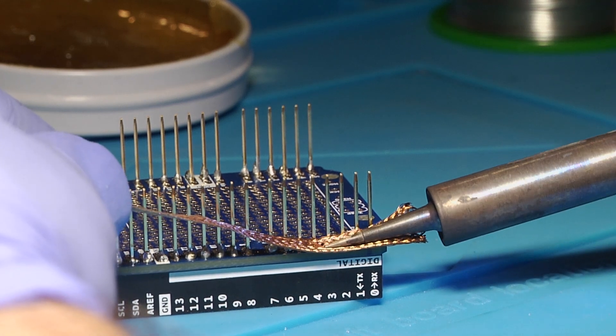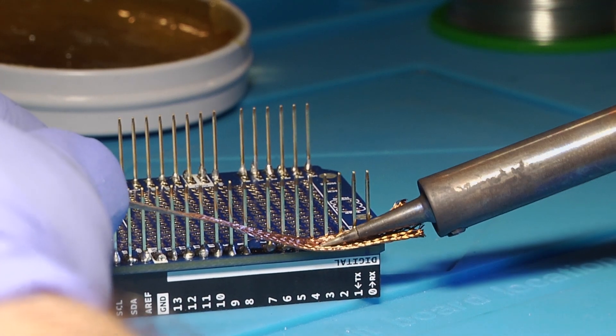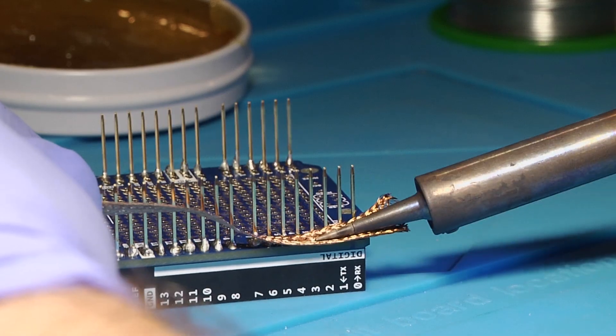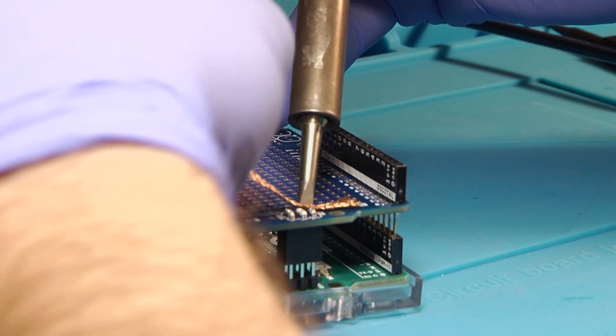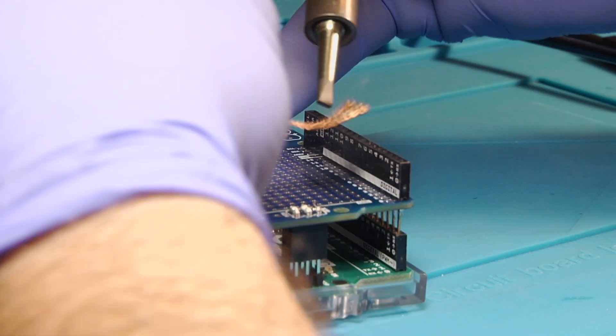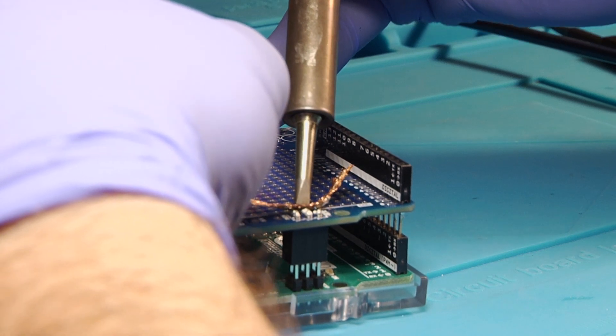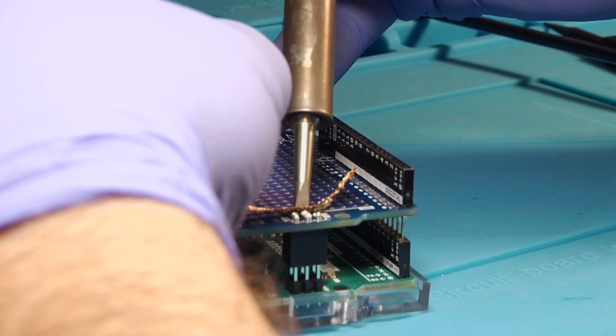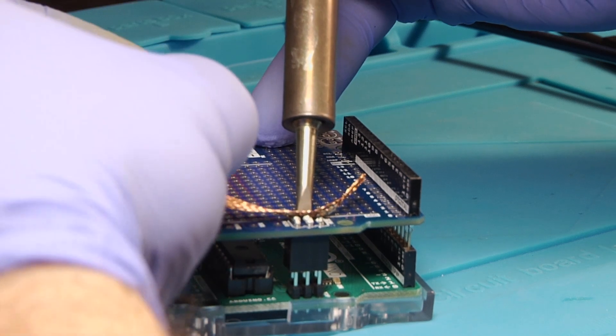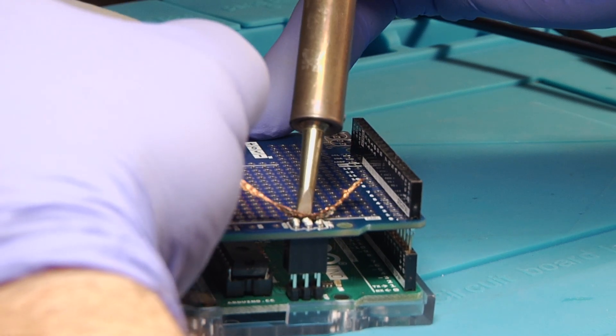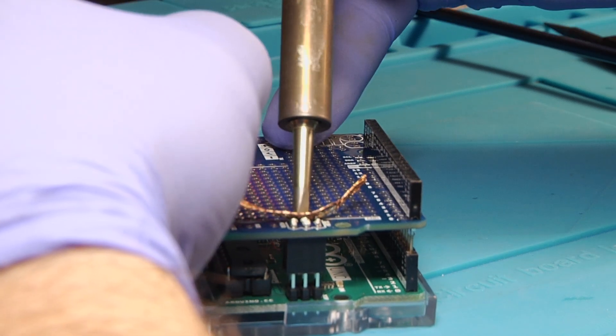If you make a mistake, like I did, like putting too much solder, use some solder wick. The solder wick can also completely remove the solder. Be careful. The solder wick gets hot, so don't touch it.